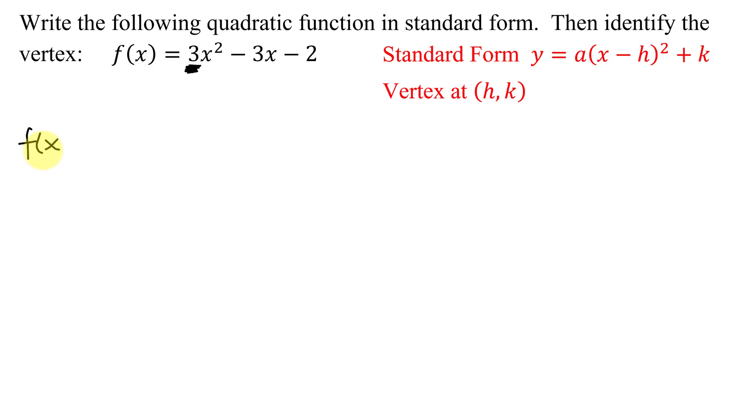I prefer the method where I just factor this coefficient 3 out of the following two terms. So factoring a 3 out of 3x² leaves x². Factoring a 3 out of -3x is going to leave -1x or just -x. And now I'm going to put plus a blank.